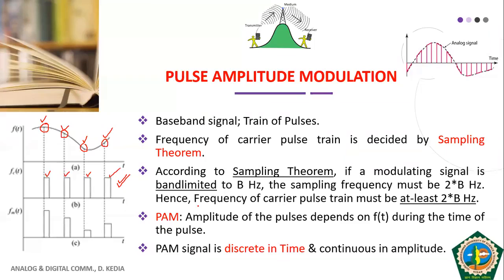That's why we need to understand the sampling theorem. The concept of PAM and the concept of sampling go together. We need to define the frequency of the carrier signal — the carrier pulse train — and this is decided by the sampling theorem. The sampling frequency is the frequency of the carrier pulse train.